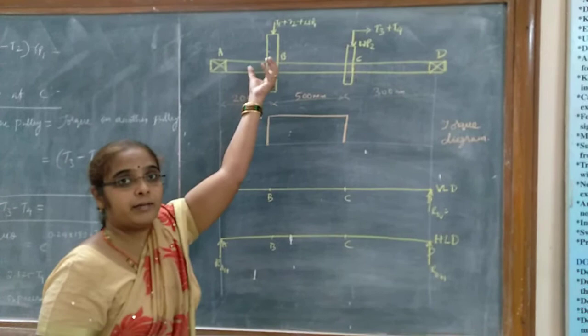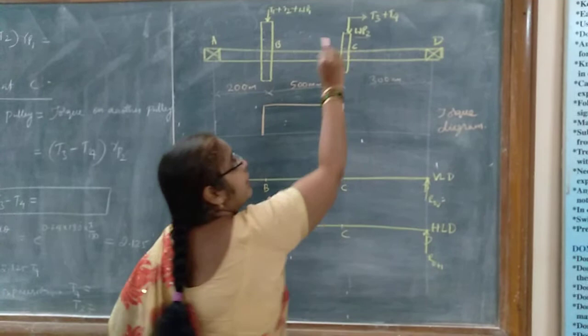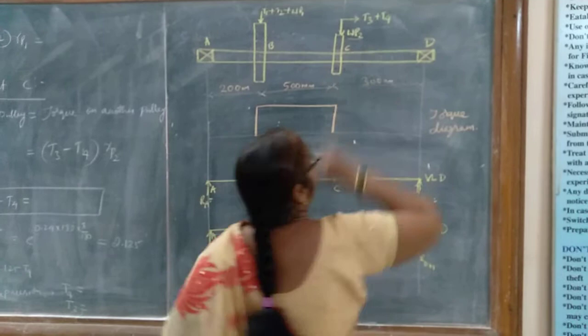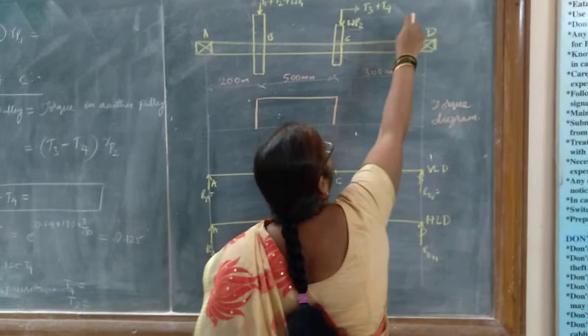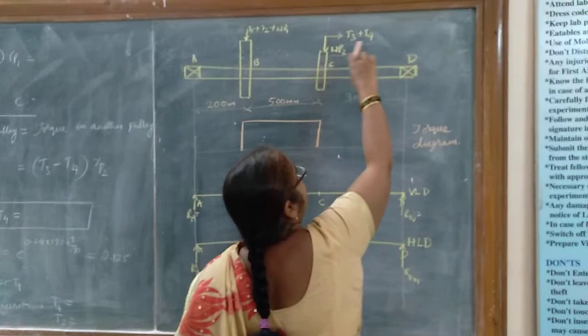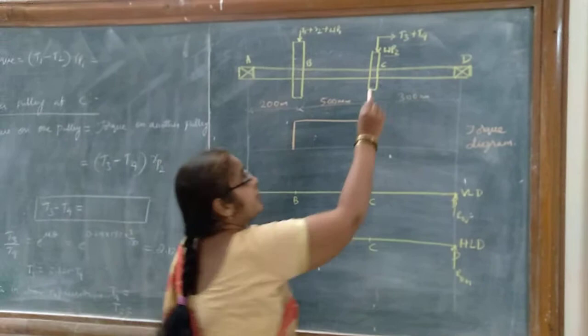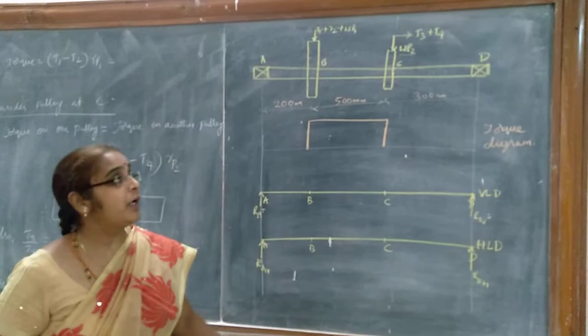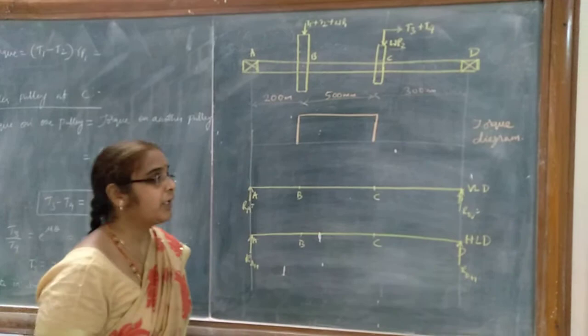The weight WP1 acts downwards. T1, T2, and the weight all three act downwards. WP2 is the weight of the second pulley, which also acts downwards. T3 and T4 are the tensions in the belt due to the horizontal mounting of the motor. Since the motor is mounted horizontally, the belt runs horizontally, and hence T3 and T4 act in the horizontal direction. So we need to find the values of T1, T2, T3, and T4.